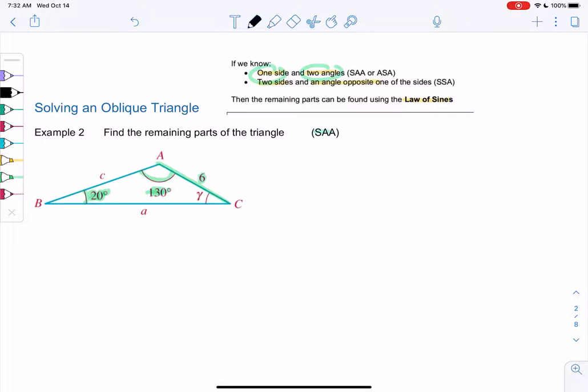SAA, because if we go in a circle, we know side, angle, angle. Or you can do it backwards - AAS would be the same thing if you went the other way: angle, angle, side.